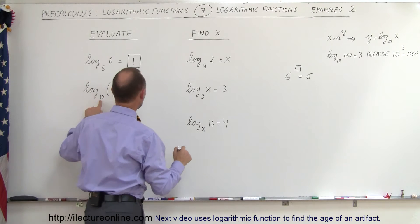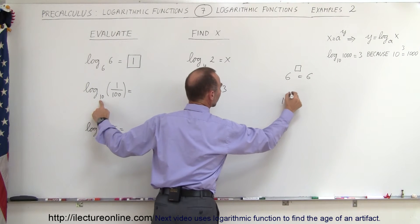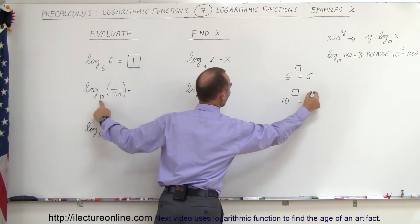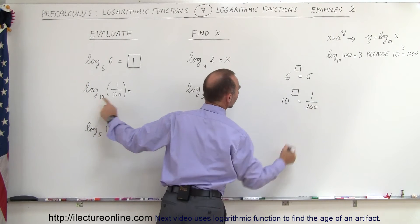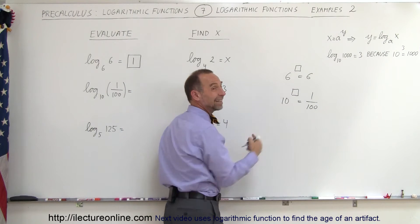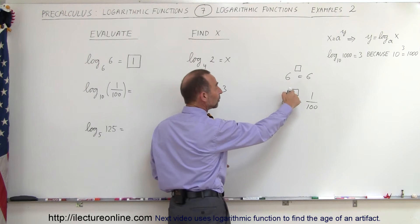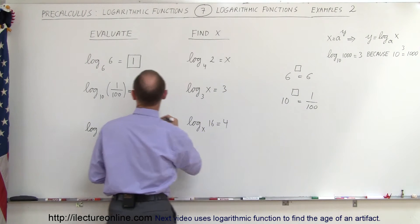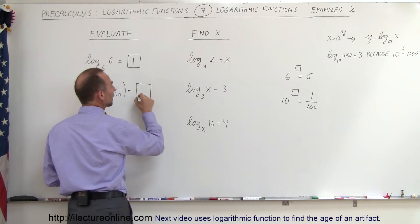Same thing over here, you take this base, raise it to some unknown number and you get 1 over 100, which means what you need over here is a negative 2, because 10 to the negative 2 is 1 over 10 to the 2, which is equal to 1 over 100. So what goes in the box here would be a negative 2, because that's what we decided right here.